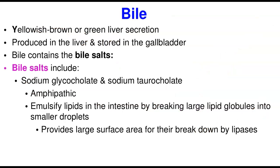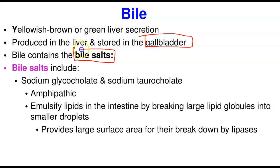Bile is a yellowish-brown or green liver secretion. It is produced in the liver and then stored in the gallbladder. When it is needed, the gallbladder releases it. Bile contains bile salts, which will be our main interest.